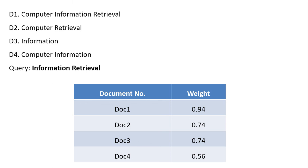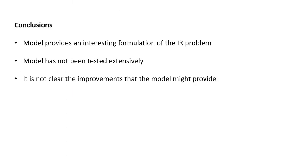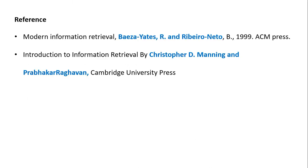For the four documents with the query information retrieval, after the first completion phase we get weights of 0.94, 0.74, 0.74, and 0.56. After that, there is back propagation between the document nodes and the document term nodes, but it is not possible to solve this manually, so only the initial phase is shown. In conclusion, the model provides an interesting formulation of the IR problem, but it has not been tested extensively and it is not clear what improvements the model might provide. Two references were used: 'Models of Information Retrieval' and 'Introduction to Information Retrieval.' Thank you.